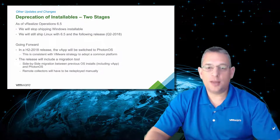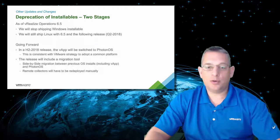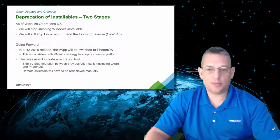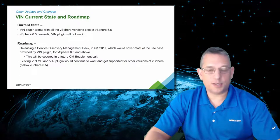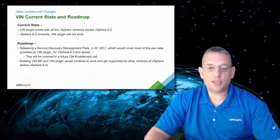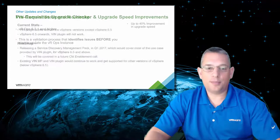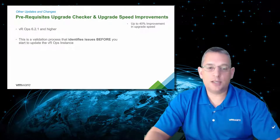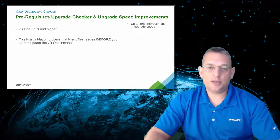As of vRealize Operations 6.5, we are no longer shipping the Windows-based installable. In the second half of fiscal year 2018, we will ship with Photon OS instead of the current Linux-based OS for the appliance. Also, the vSphere Infrastructure Navigator, or VIN, plug-in works with all versions of vSphere except vSphere 6.5 and later — a new service discovery management pack for vROps will serve as its replacement. Additionally, vRealize Operations 6.2.1 and higher now includes a prerequisite upgrade checker that can upgrade vROps up to 40% quicker, identifying issues before the update process begins.